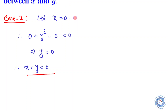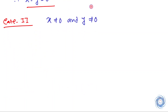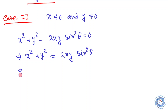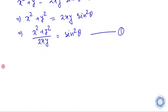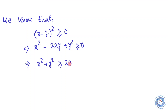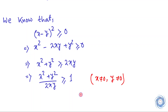Now in the second case, let us assume that x and y are both non-zero. Let us rewrite the given equation again. We know that for any real numbers x and y, we have (x - y)² ≥ 0. And from here, assuming x and y are both non-zero, let us take this inequality as two.